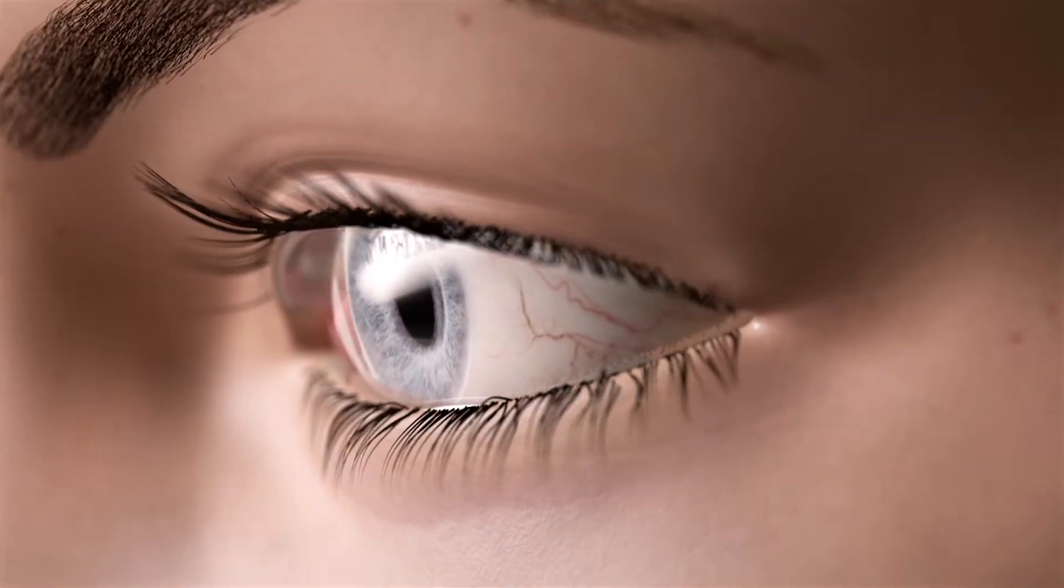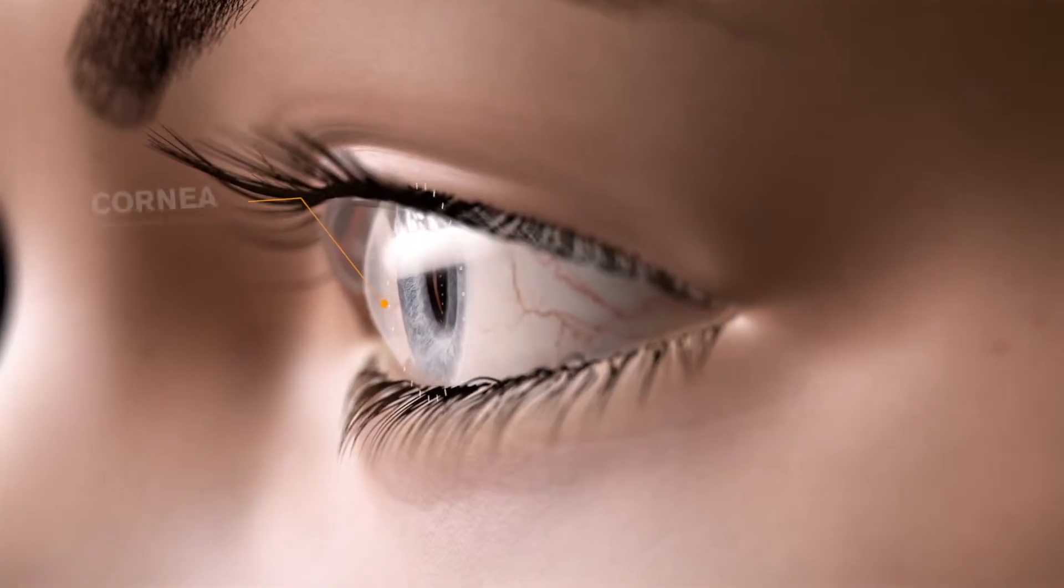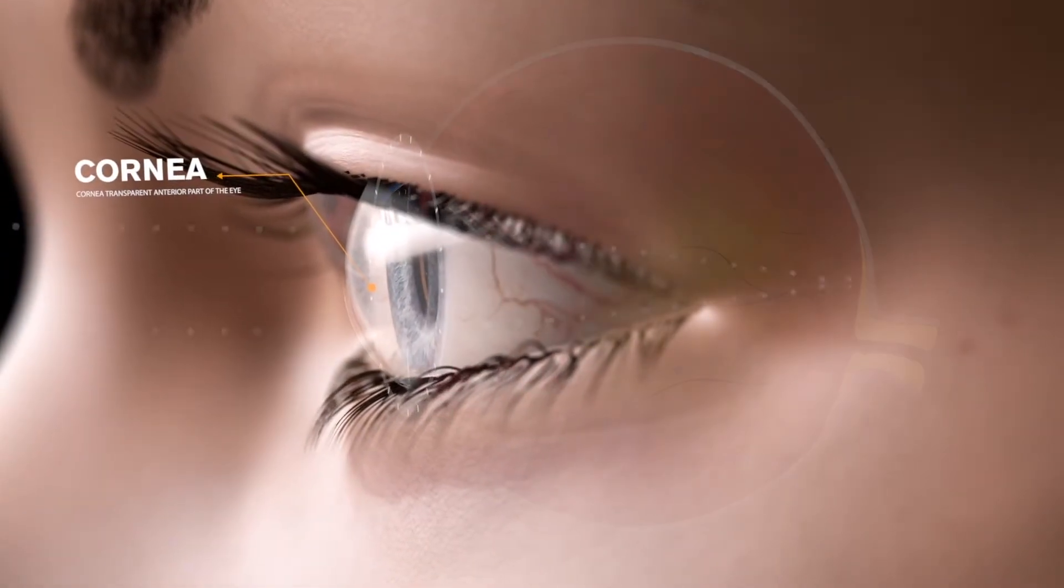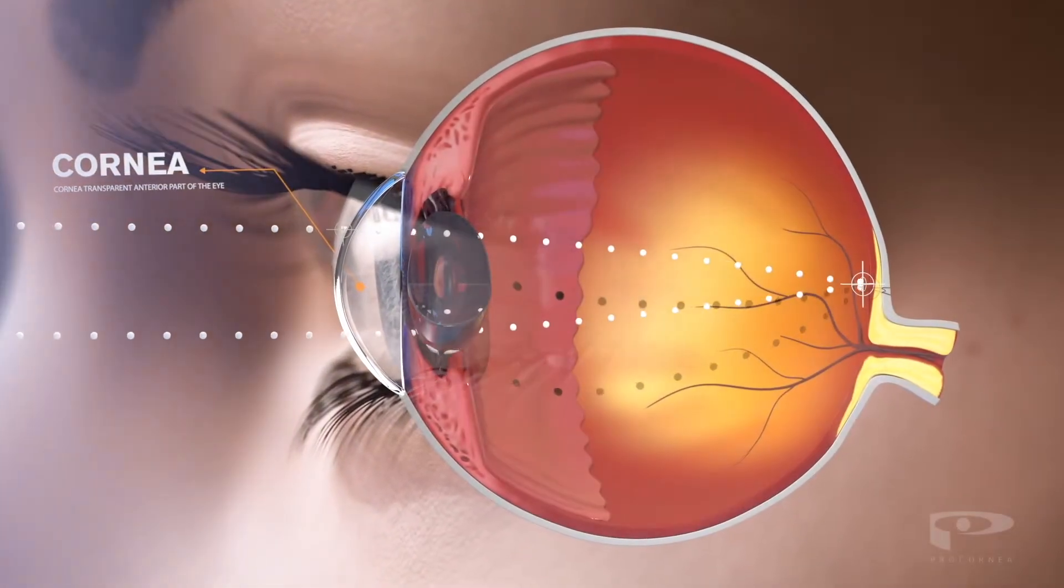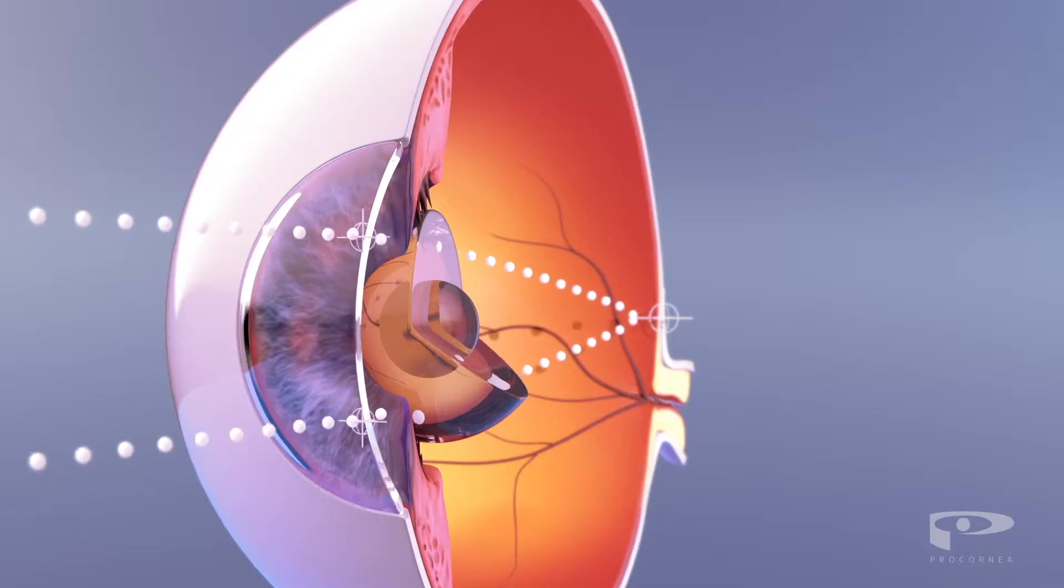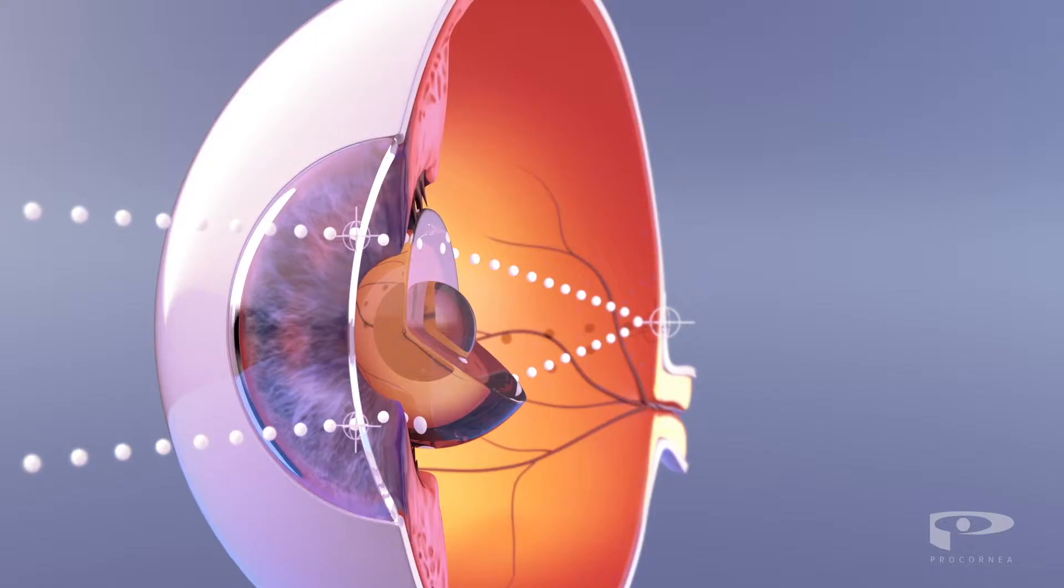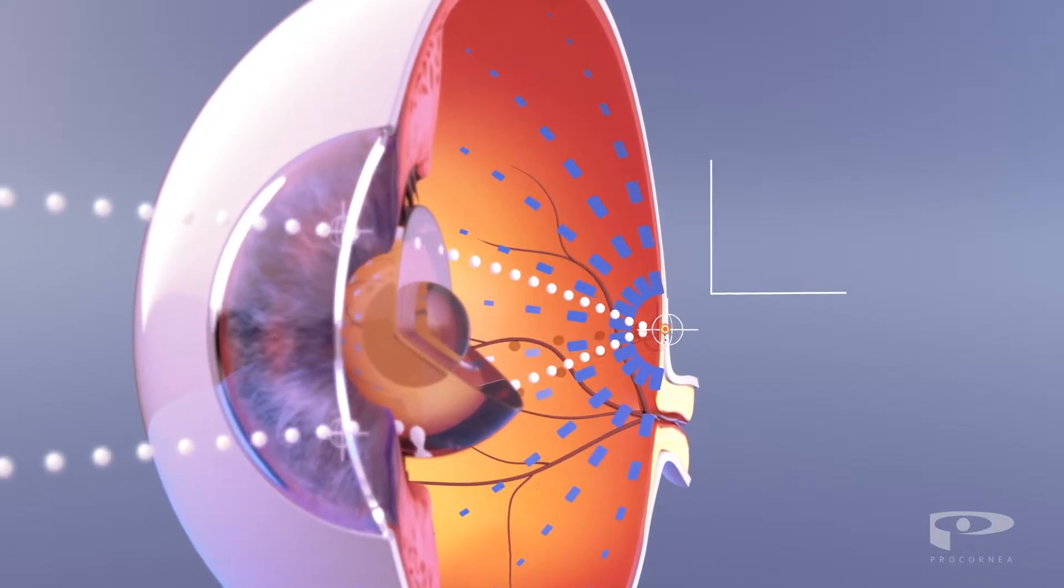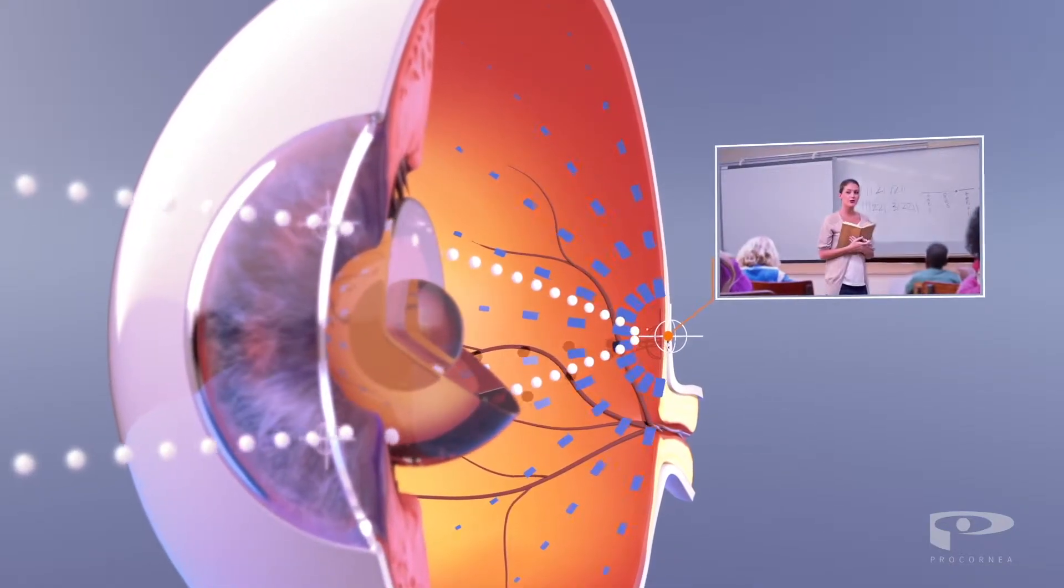When we look at something, light enters the eye through the cornea. The cornea has a curved lens-like shape, which helps to focus light directly on the retina at the back of the eye. This forms a clear, sharp image.